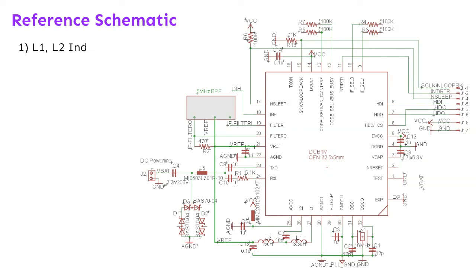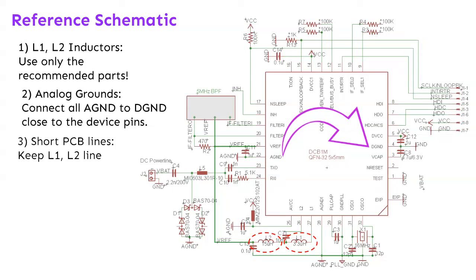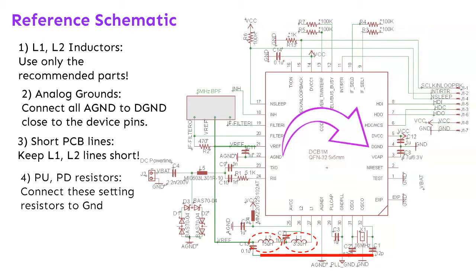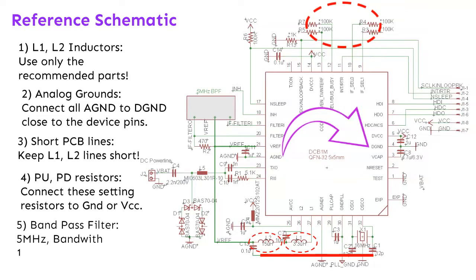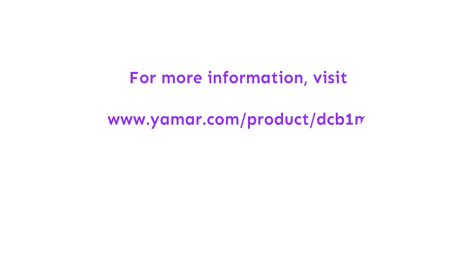Reference schematic guidelines: L1 and L2 inductors — use only the recommended parts. Connect all analog GND to digital GND close to the device pins. Keep L1 and L2 lines to the device short. Connect pull-up and pull-down setting resistors to GND or VCC. Band pass filter: 5 MHz, bandwidth 1.4 MHz, 470 ohm. For more information, go to yamar.com/product/DCB1M.